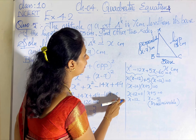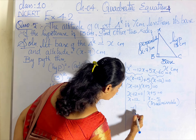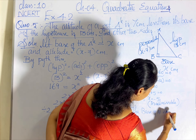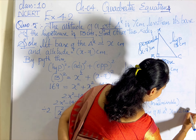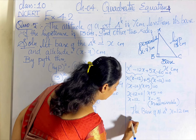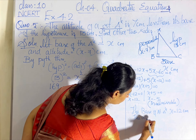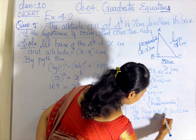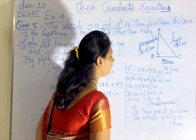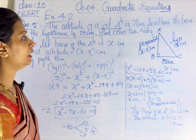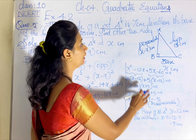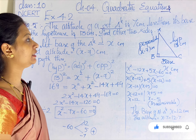Therefore, x equals 12 is the base of the right triangle — that is, the base equals 12 centimetres. The altitude of the triangle is x minus 7, which is 12 minus 7 equals 5 centimetres. So we conclude that the right triangle has a base of 12 cm and an altitude of 5 cm. These are the two sides we needed to find from the given data.